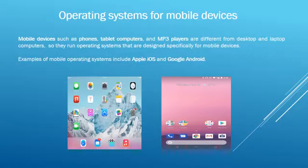Operating systems for mobile devices — mobile devices such as phones, tablets, and MP3 players are different from desktop and laptop computers, so they run operating systems designed specifically for mobile devices. Operating systems discussed so far were designed for desktop and laptop computers. In this picture you can see iOS running on an iPad, iPod, iPhone, and iWatch. Mobile and desktop operating systems have very similar features — only desktop operating systems can afford more memory. Both need to manage memory consumption, support multitasking, and are optimized to save power.